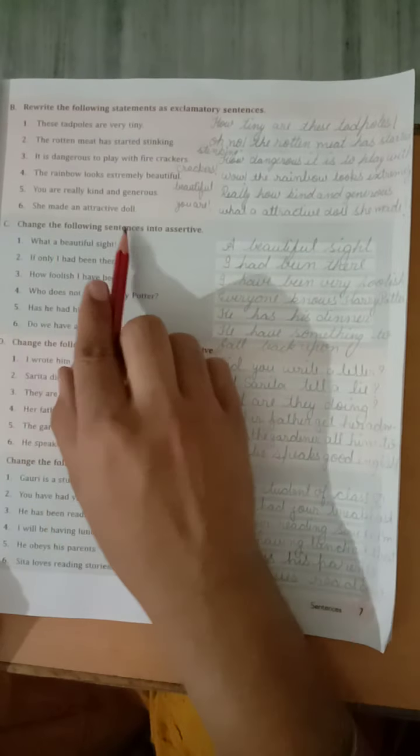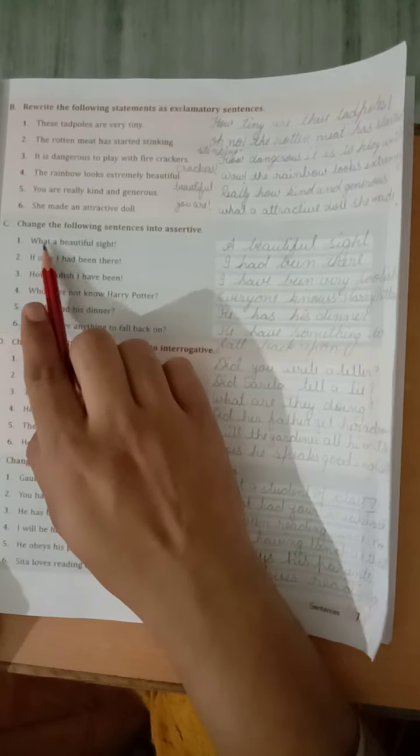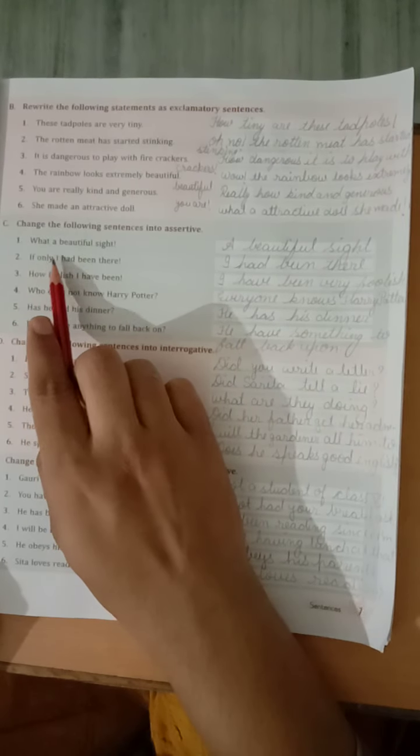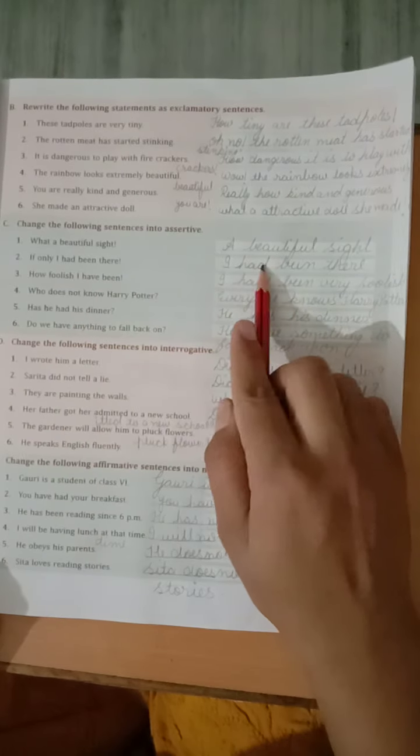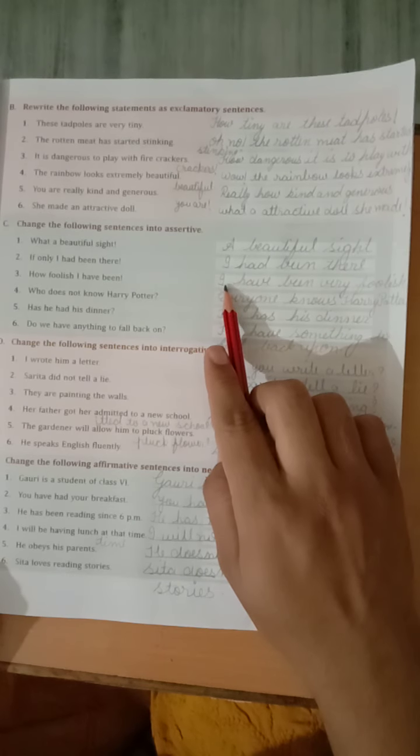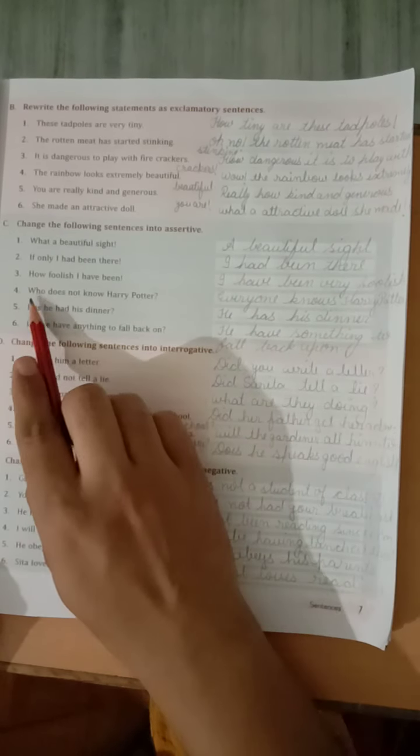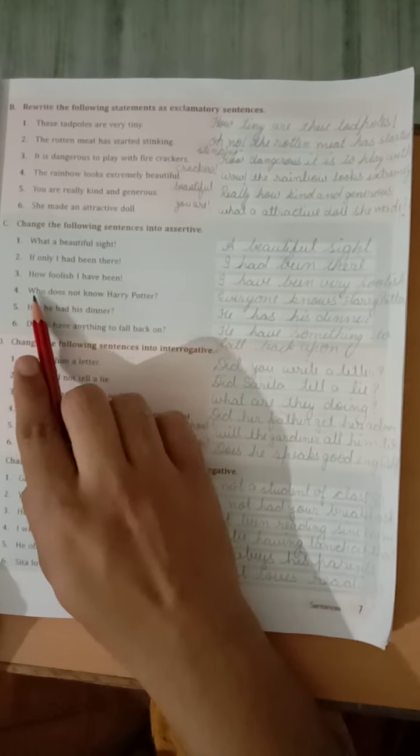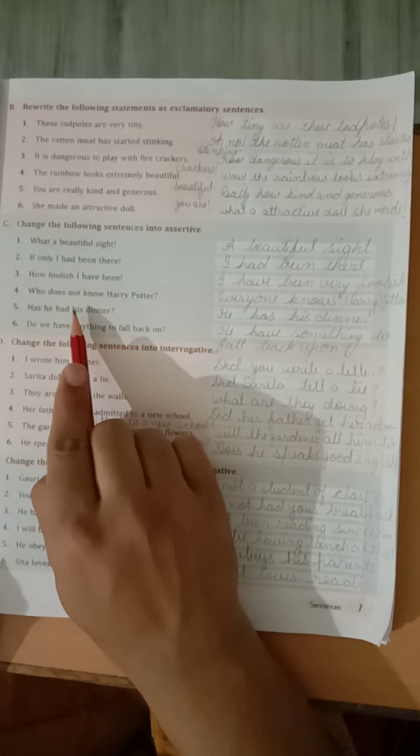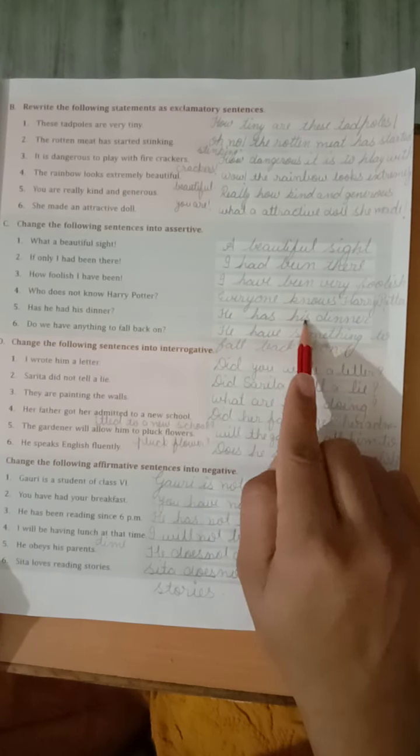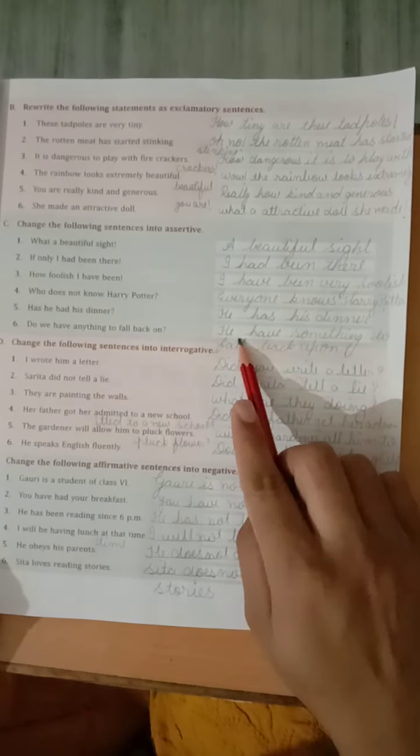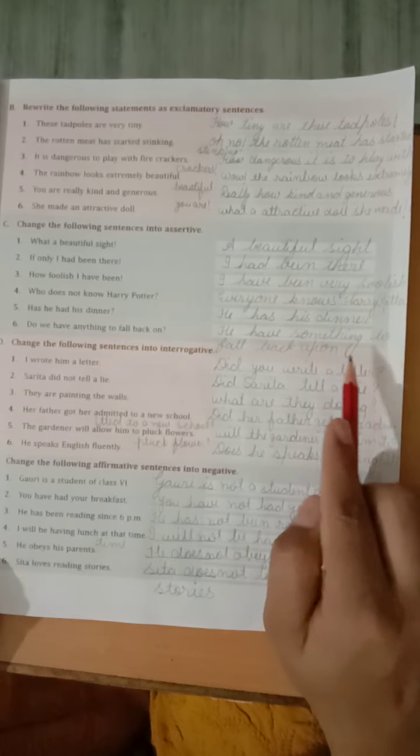C part. Change the following sentences into assertive. What a beautiful sight. A beautiful sight. If only I had been there, I had been there. How foolish I have been. I have been very foolish. Who does not know Harry Potter? Everyone knows Harry Potter. Has he had his dinner? He has his dinner. Do we have anything to fall back on? He has something to fall back upon.